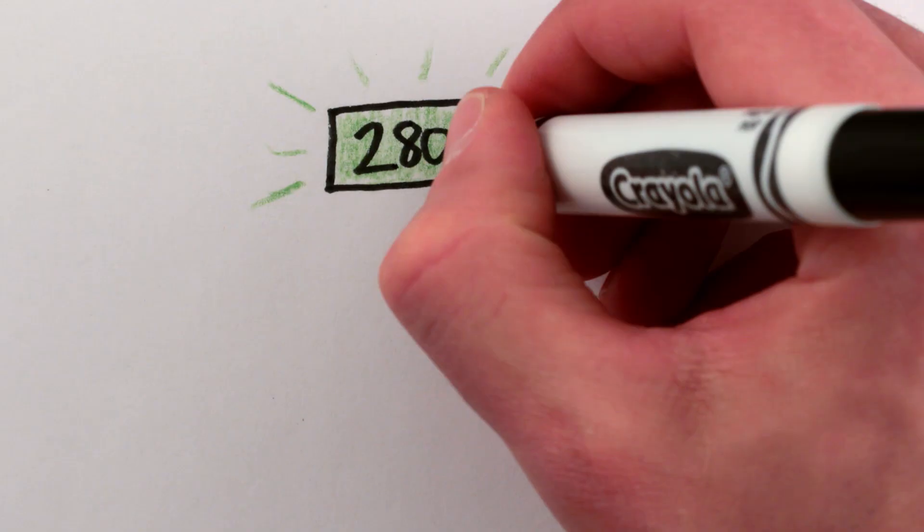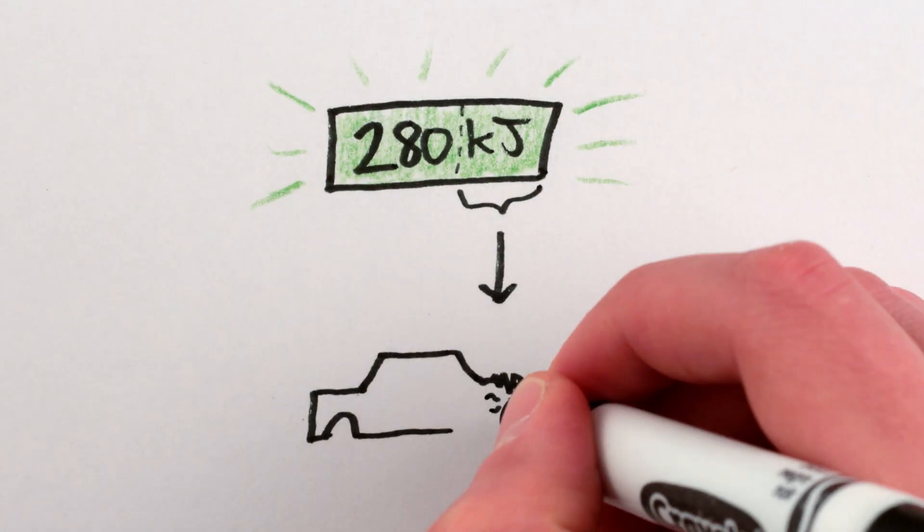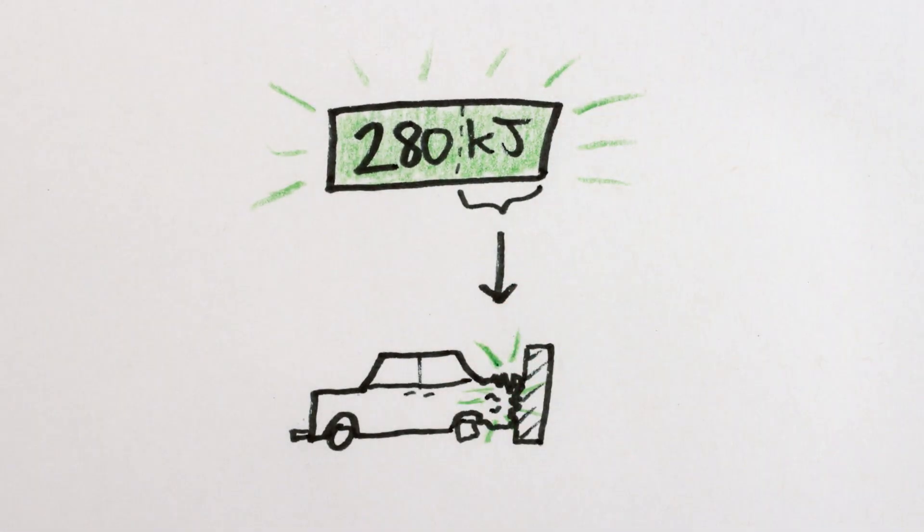Most, and in ideal circumstances all, of the rest of the energy is absorbed by the deformation of other pieces of structural metal throughout the front of the car.